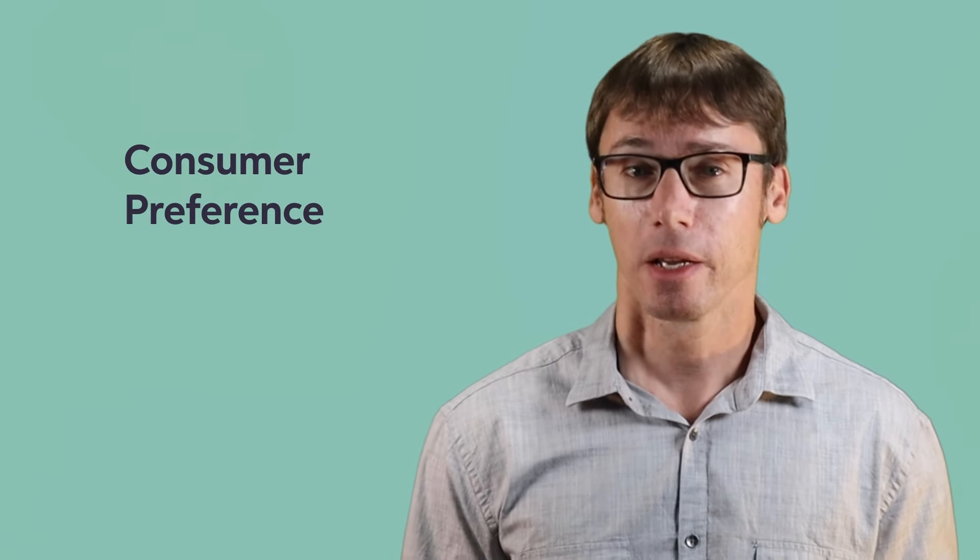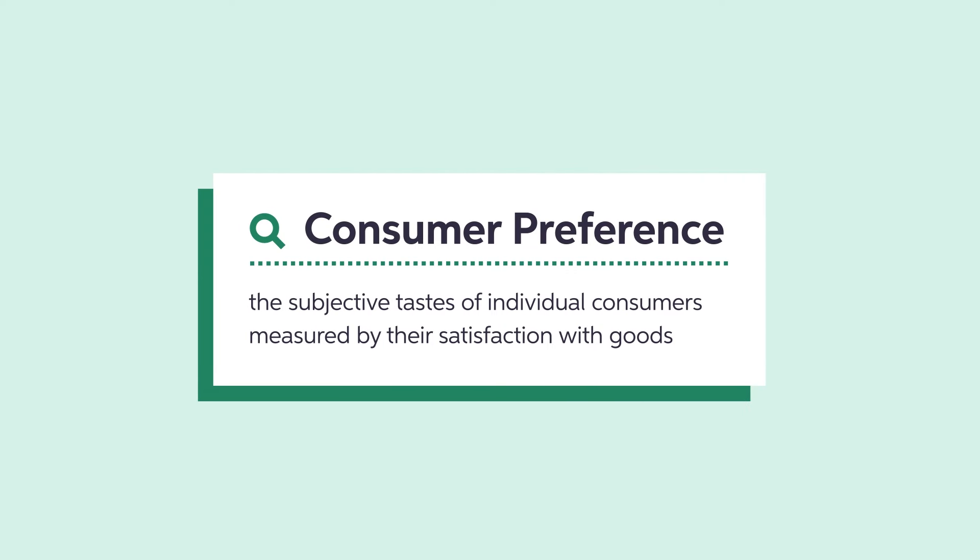The fourth demand determinant is consumer preference. This one is pretty straightforward. Buyers demand goods according to their tastes. If a consumer's preference changes, then demand changes accordingly. For example, a movement of health diet awareness could change the consumer's taste and decrease the demand for fast foods.